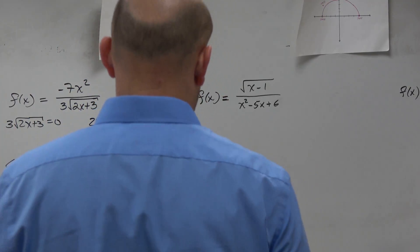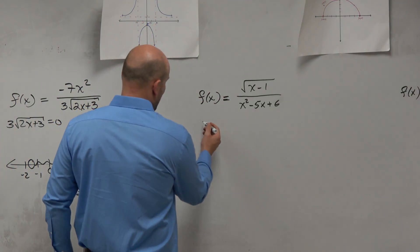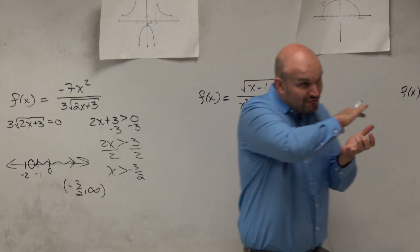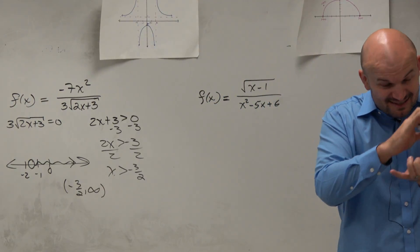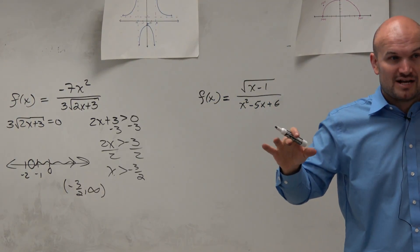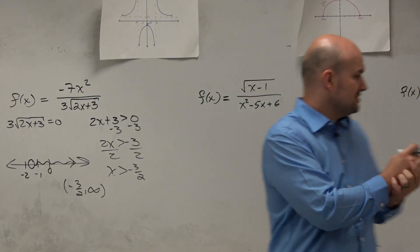The equation we have, now we have a radical in the numerator. But again, any time I see a fraction bar, guys listen, very important. Any time I see a fraction bar, denominator cannot be equal to 0.